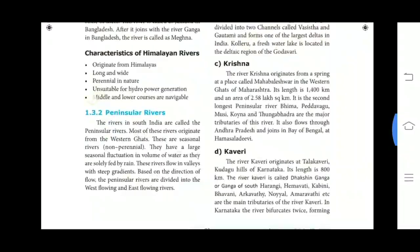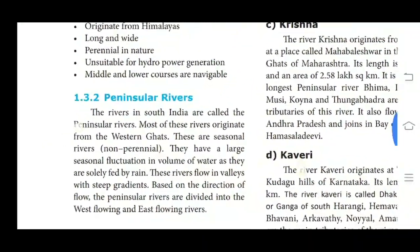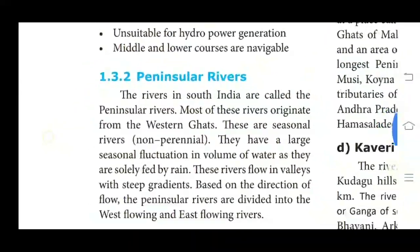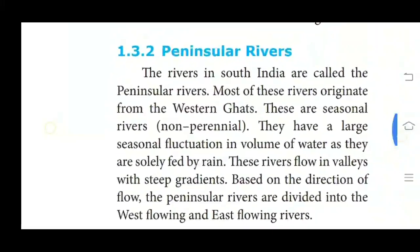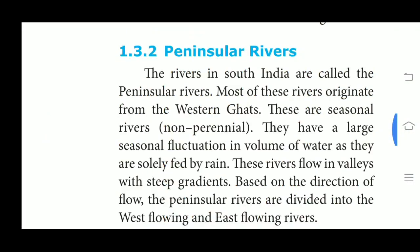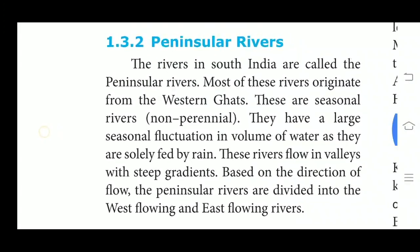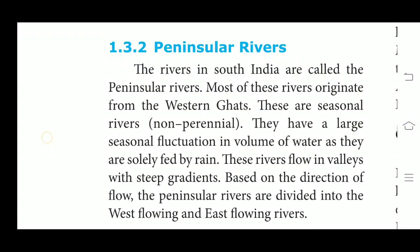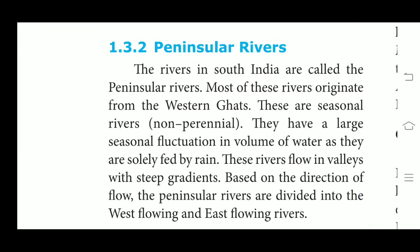The Peninsular rivers originate from the Peninsular plateaus and small hills of India. The main water divide in Peninsular India is formed by the Western Ghats, which runs from north to south close to the western coast. A large number of Peninsular rivers are seasonal, as the flow is dependent on rainfall.